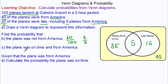Find the probability the plane was on time and from America. Well, on time means it was not late, so that would be in this region here. That would be 35 out of 100, which is seven-twentieths.